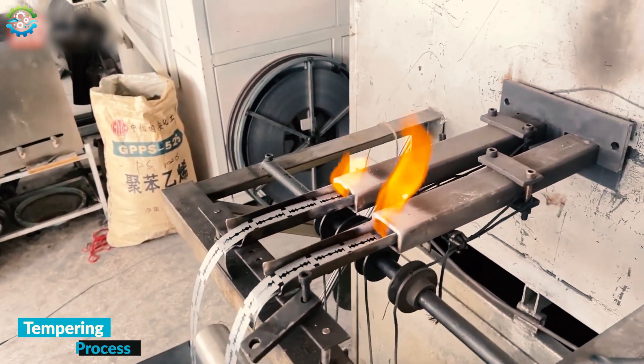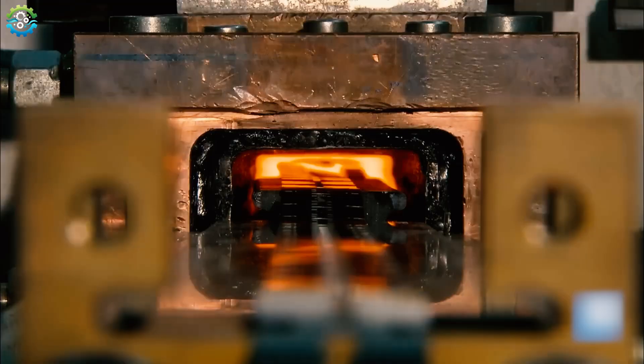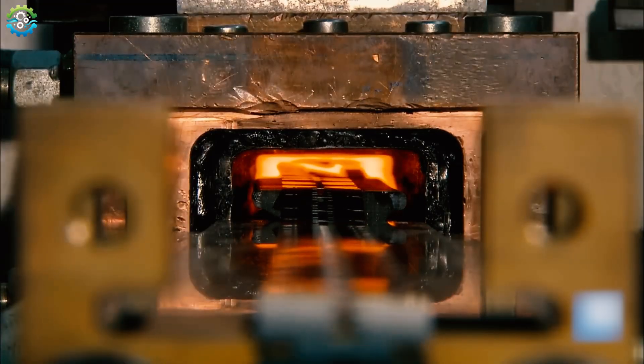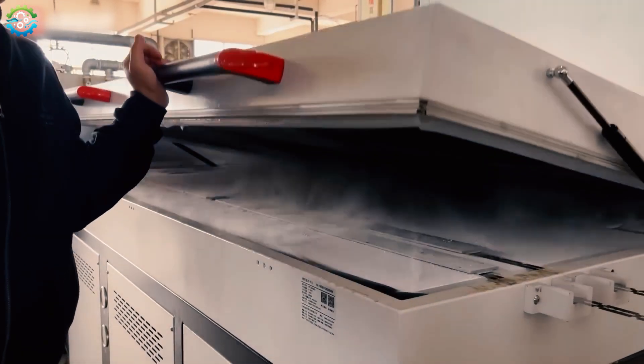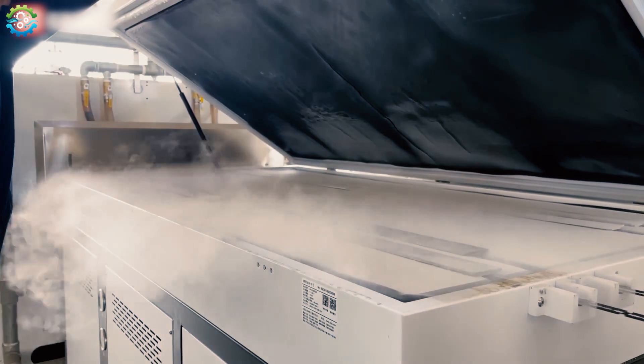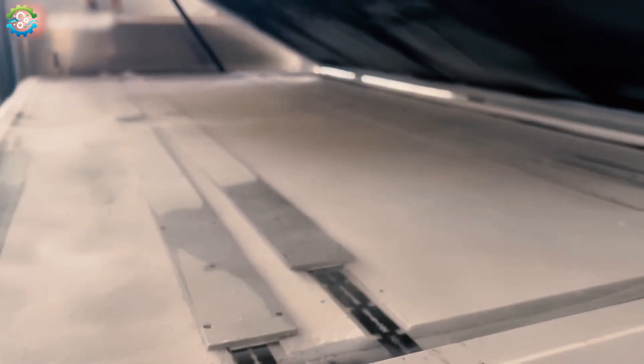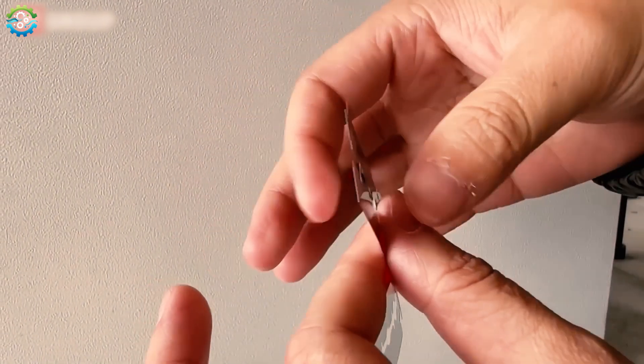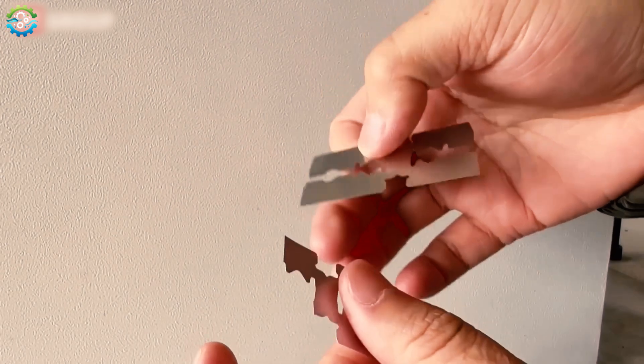To increase the temper, the blades go through a tempering process. In this process, the blade strip is passed through extreme heat, and then immediately cooled down, passed through extreme cold. This phenomenon increases the temper, hardness, and durability of razor blades.